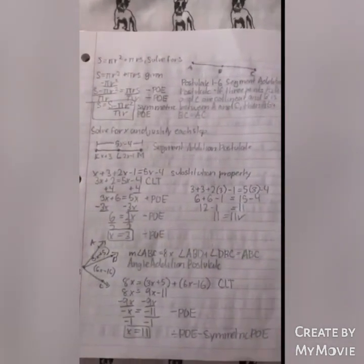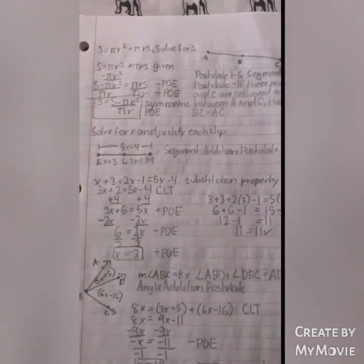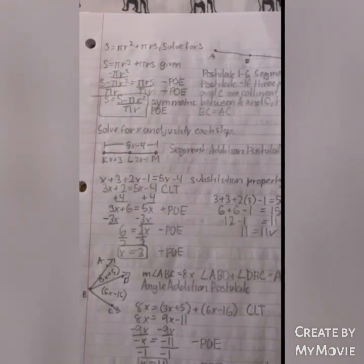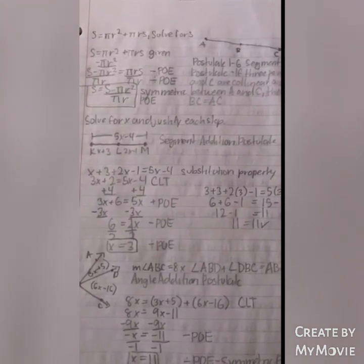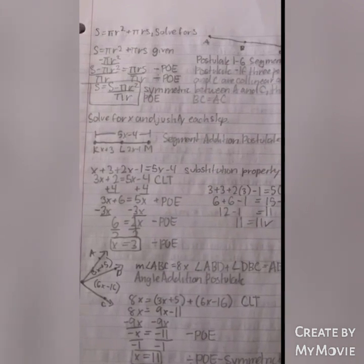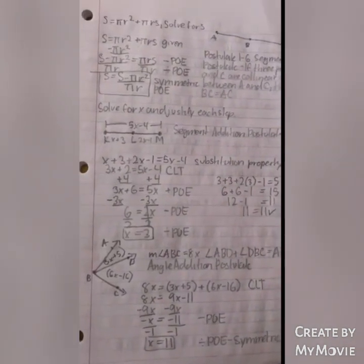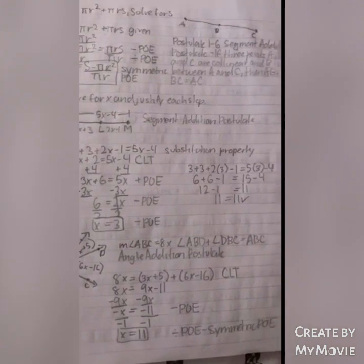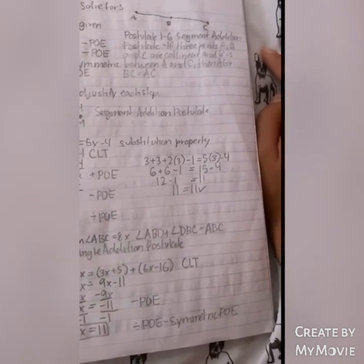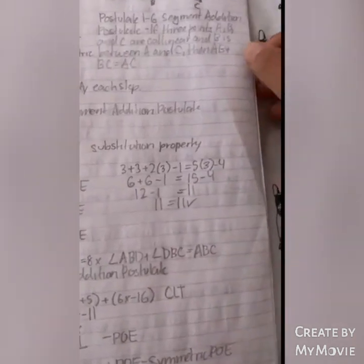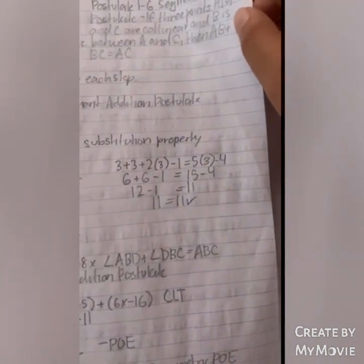Solve for X and justify each step using the Segment Addition Postulate: (X + 3) + (2X − 1) = X + (−4) plus substitution. Combining like terms: 3X + 2 = 5X − 4 (CLT). Adding 4 to both sides: 3X + 6 = 5X (Plus POE). Subtracting 3X: 6 = 2X (Subtraction POE). X = 3 (Division POE). Check: (3+3) + (6−1) = 6 + 5 = 11. 5(3) − 4 = 11. ✓